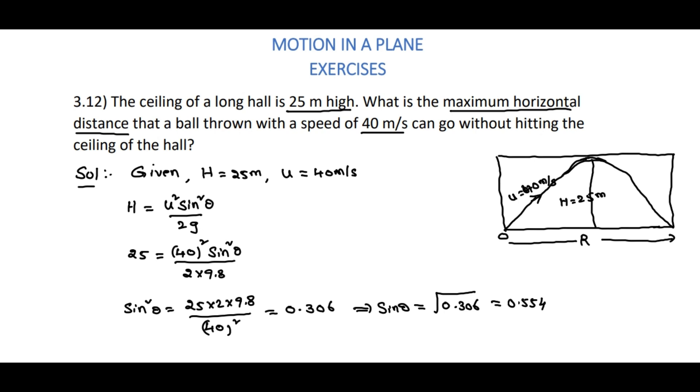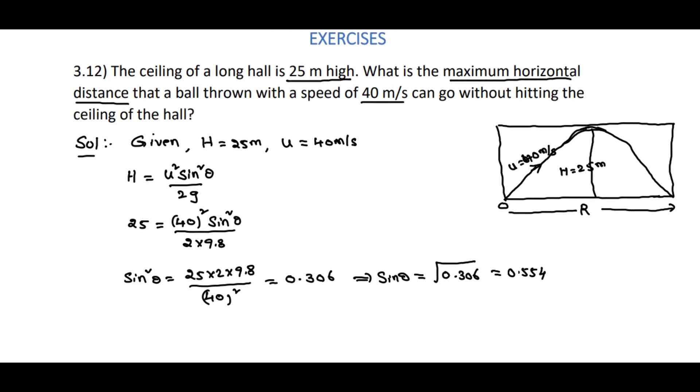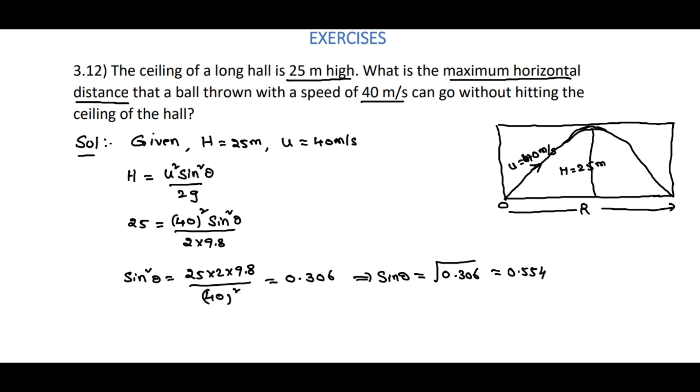And here we need to find out range, but in the range equation the cos term is there. That's why we will find out cos θ also. Cos θ is equal to square root of 1 minus sin²θ. That is equal to square root of 1 minus 0.306.